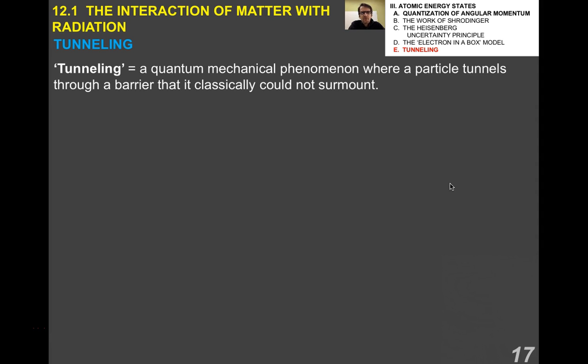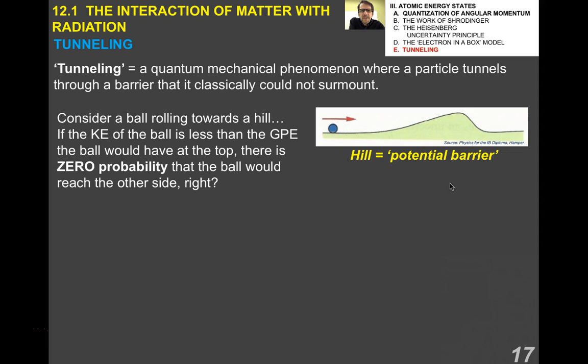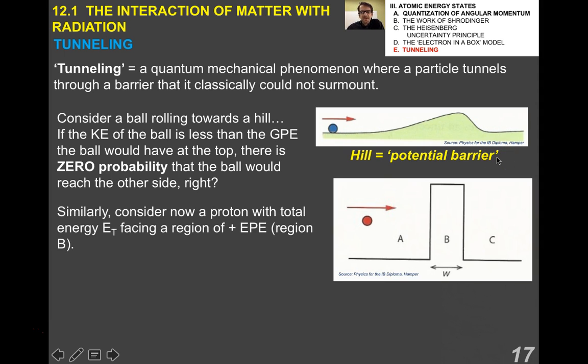Last topic. This is super cool. This idea of quantum tunneling. This is a phenomenon where a particle tunnels through a barrier that classically it couldn't surmount. I'm going to start with a classical example from your textbook. Let's say you have a hill and you have a ball rolling towards the hill. If the kinetic energy of the ball is even excluding friction, if the kinetic energy of the ball is less than the gravitational potential energy the ball would have at the top relative to the bottom, obviously there's no way, there's zero probability the ball would reach the other side and up over here. Well, in quantum mechanics, there is a way.